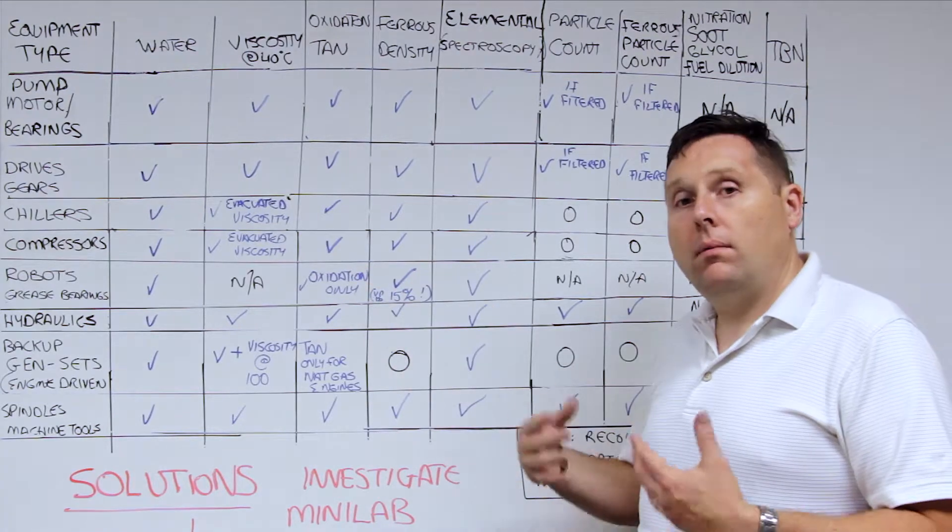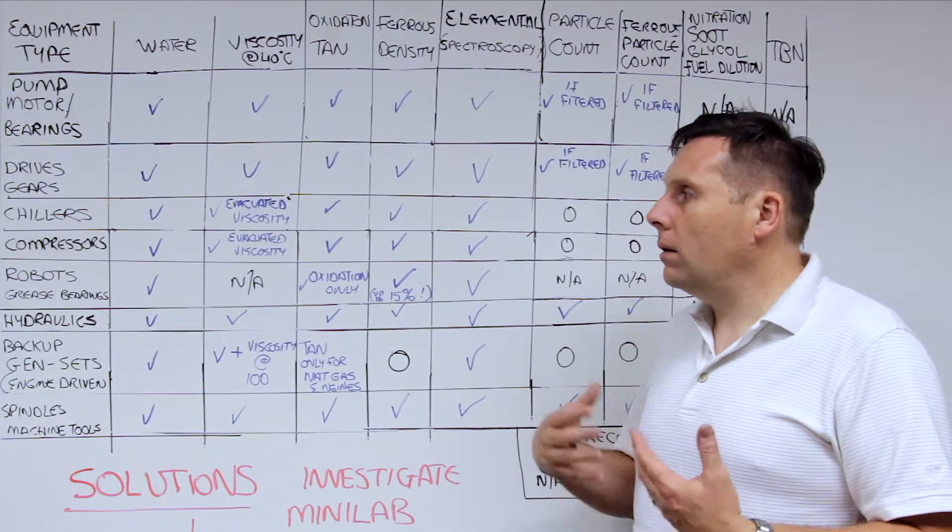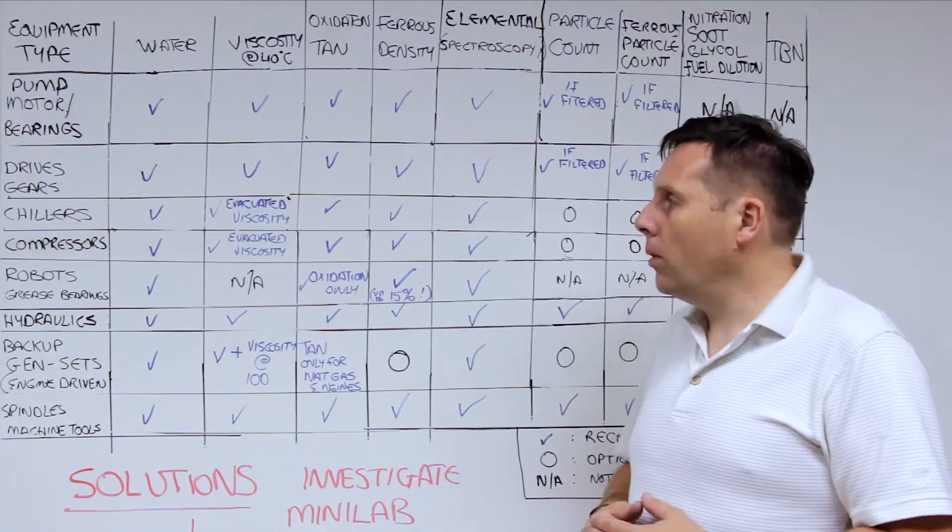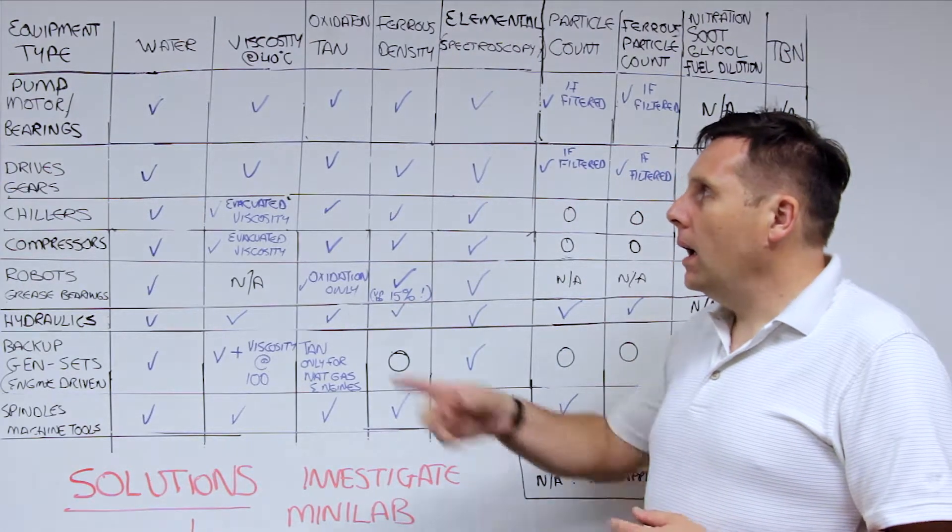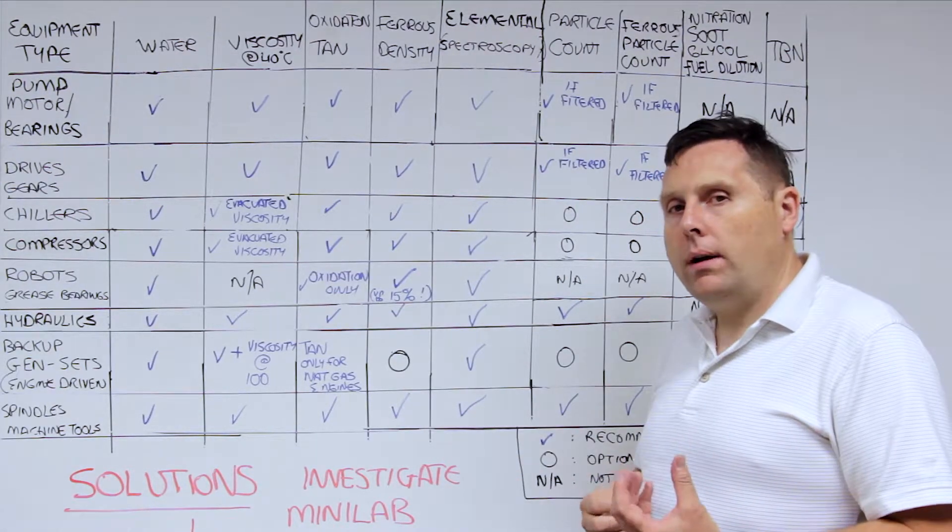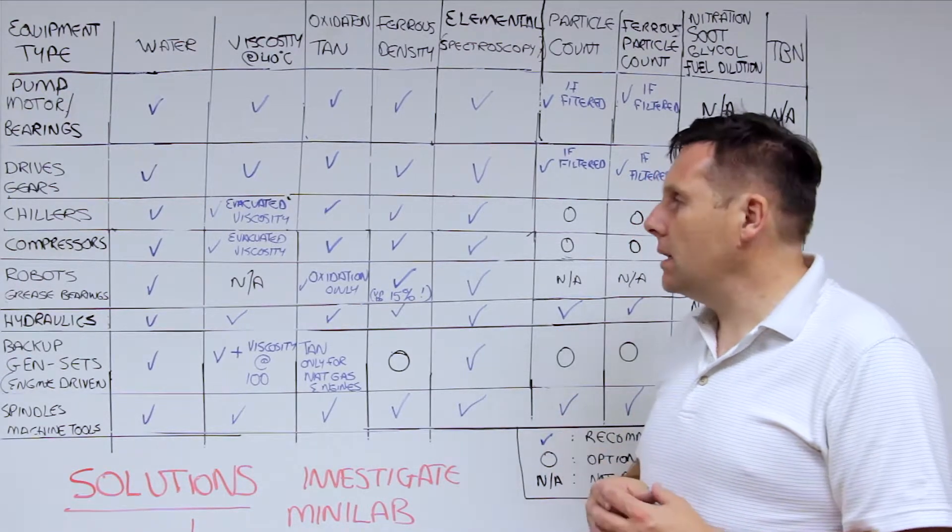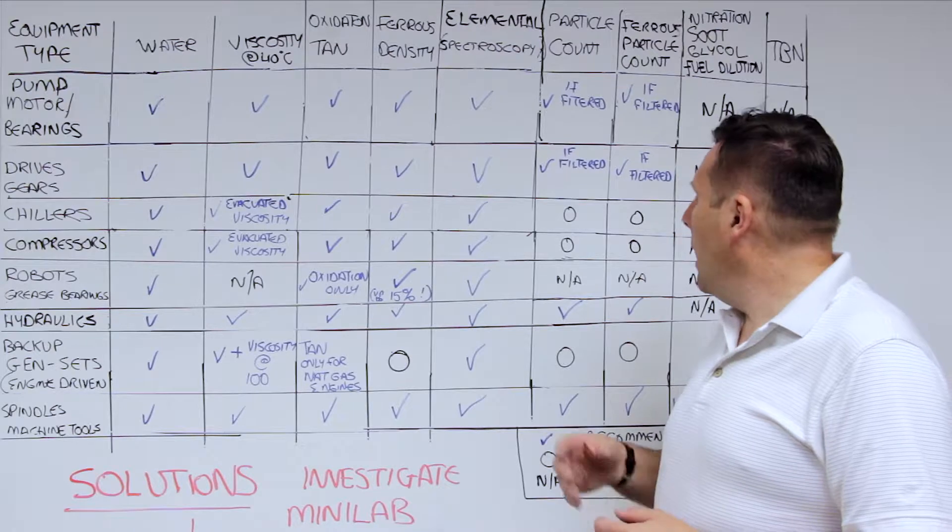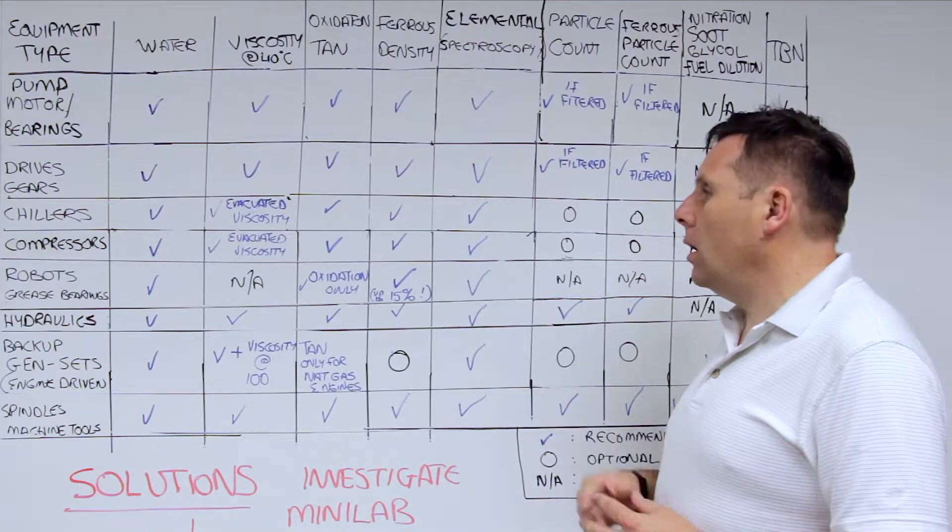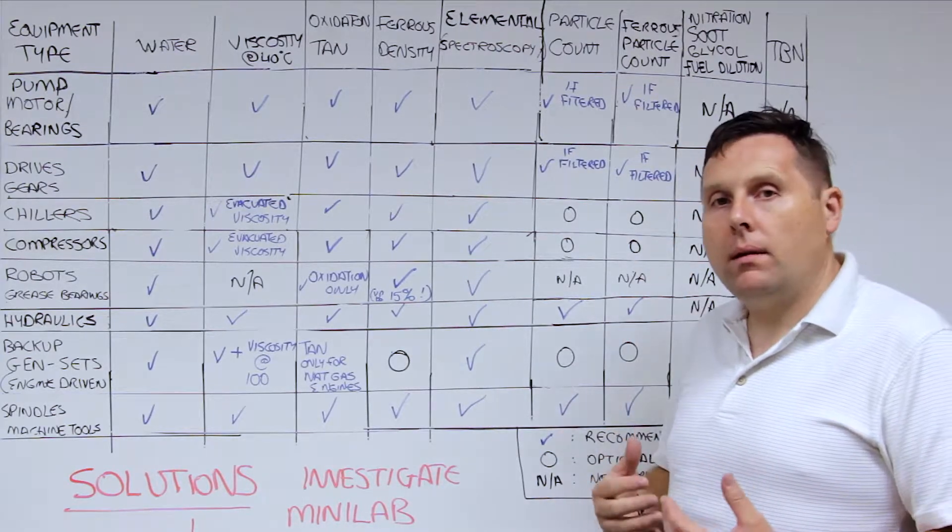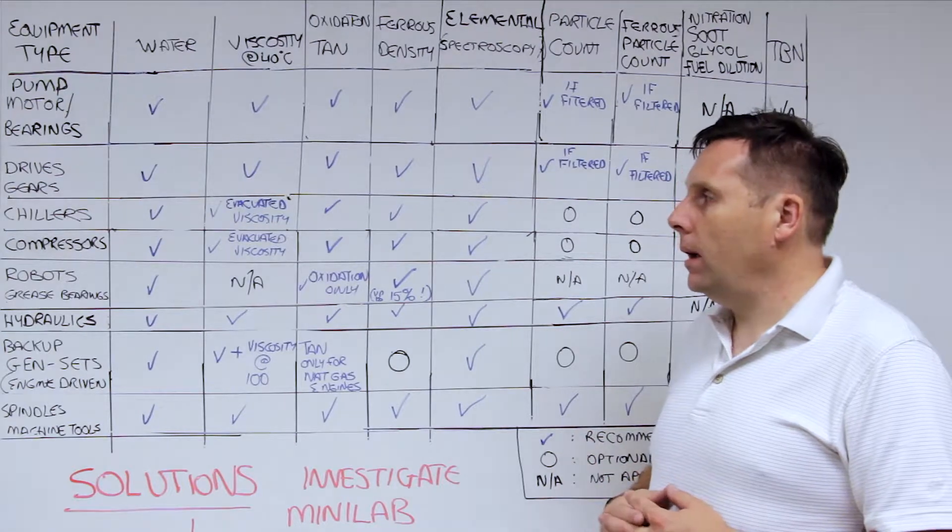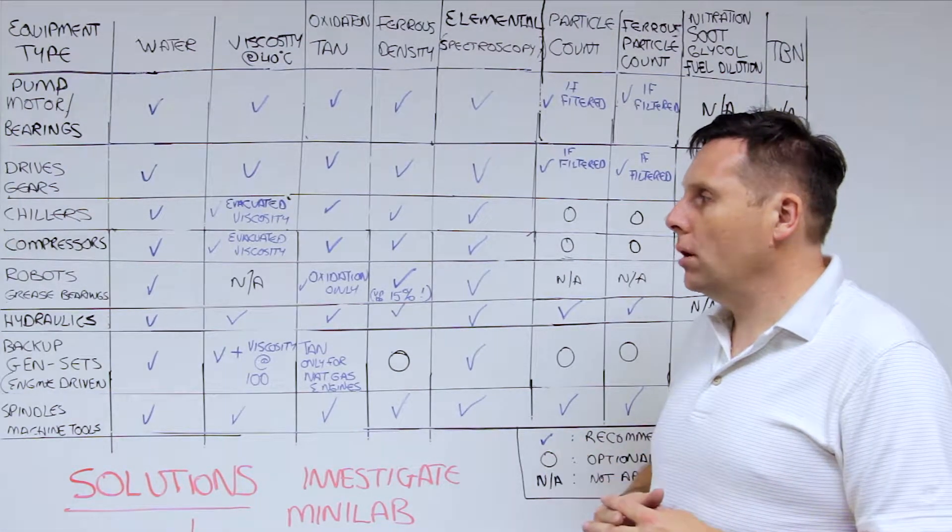Chillers, compressor systems, as we know, compressed air and chilled air are very important for process nowadays. Many of these tests apply. Viscosity is important, but provided you make sure you take the refrigerant out of the oil, because it has to be separated out or be aware of that. Those are the key tests that need to be done. You may want to run a total base number sometimes, if it's an ammonia refrigerant in the chiller.